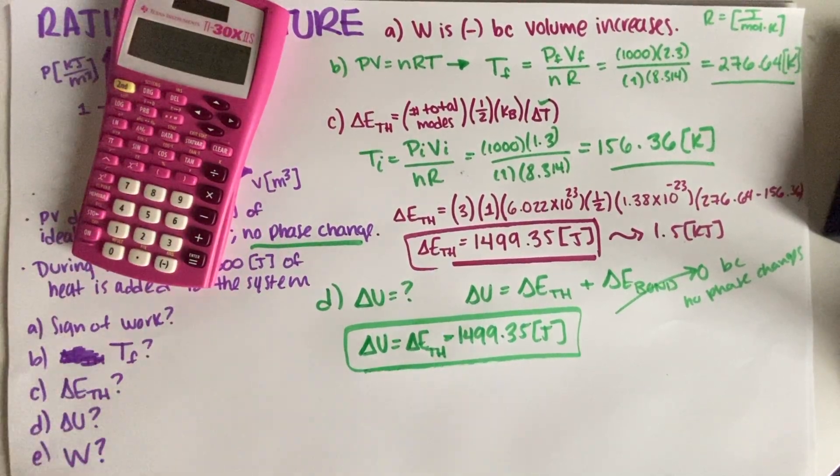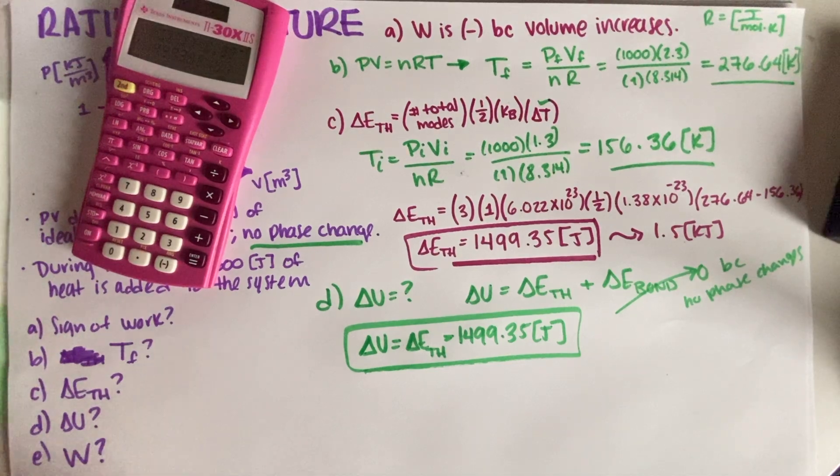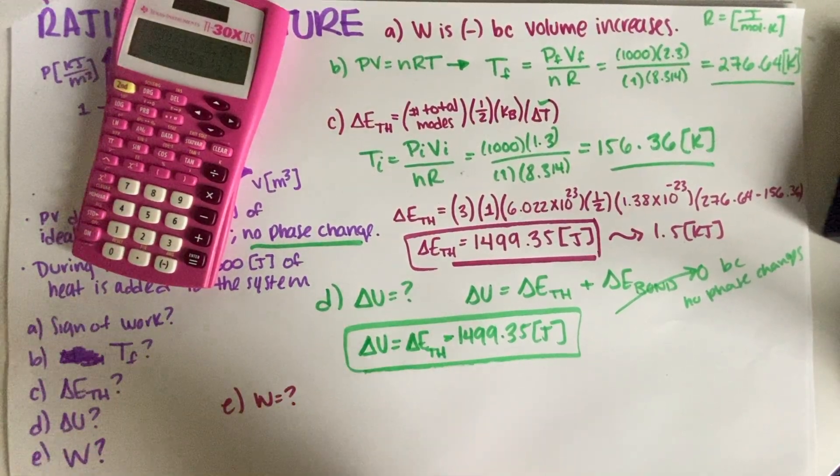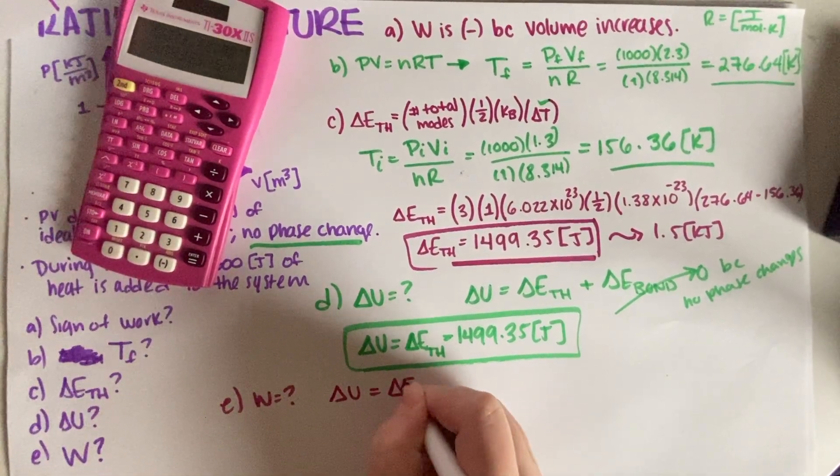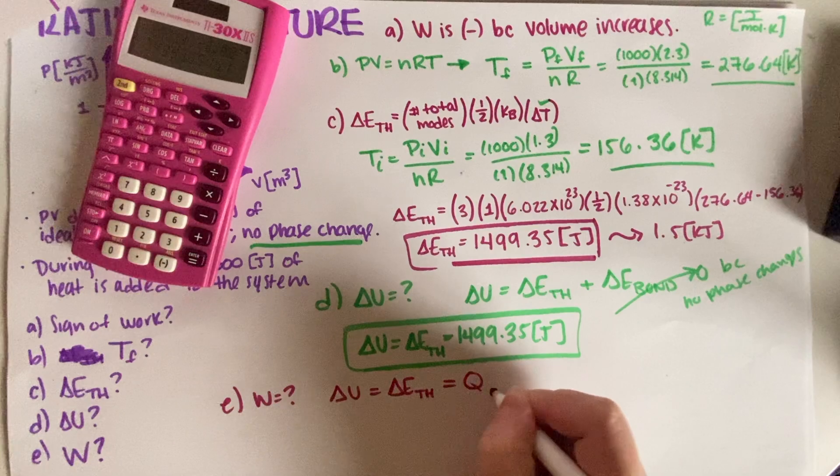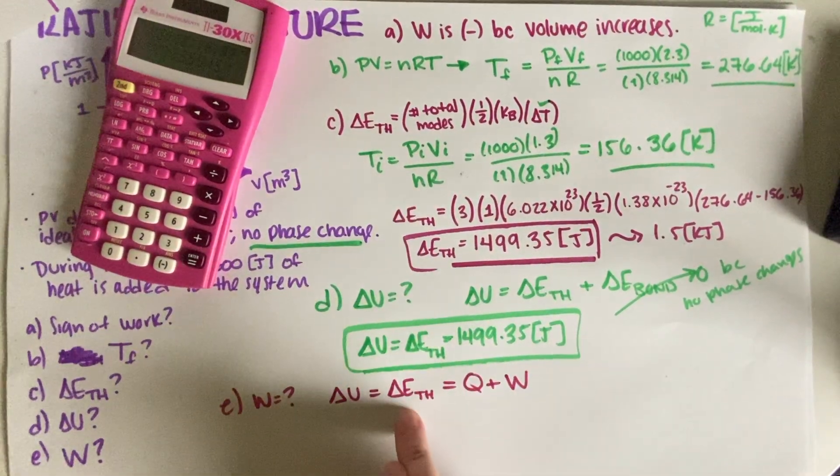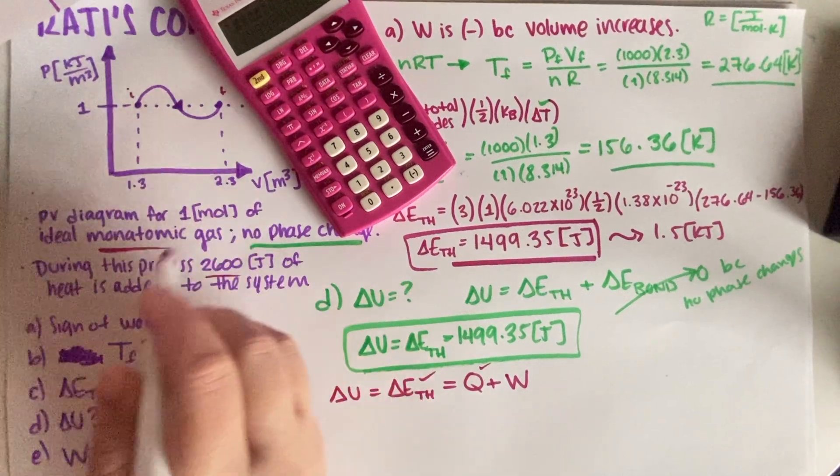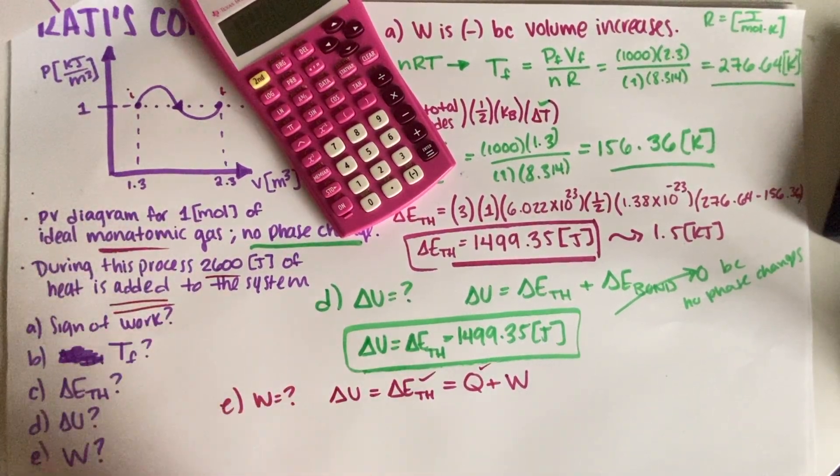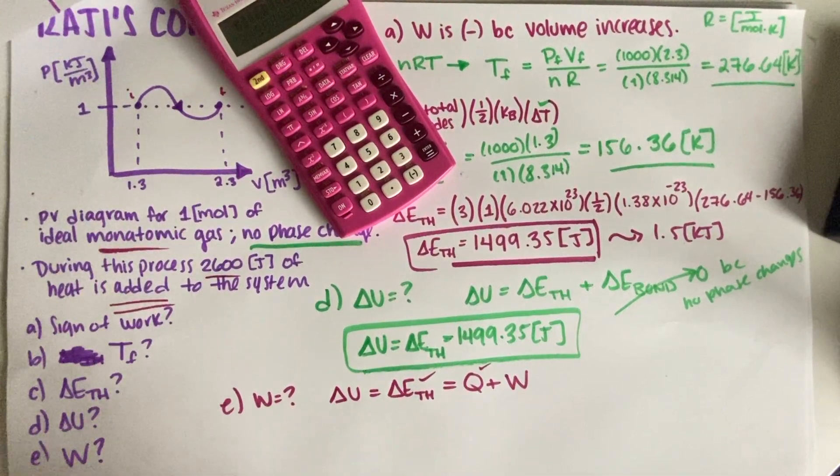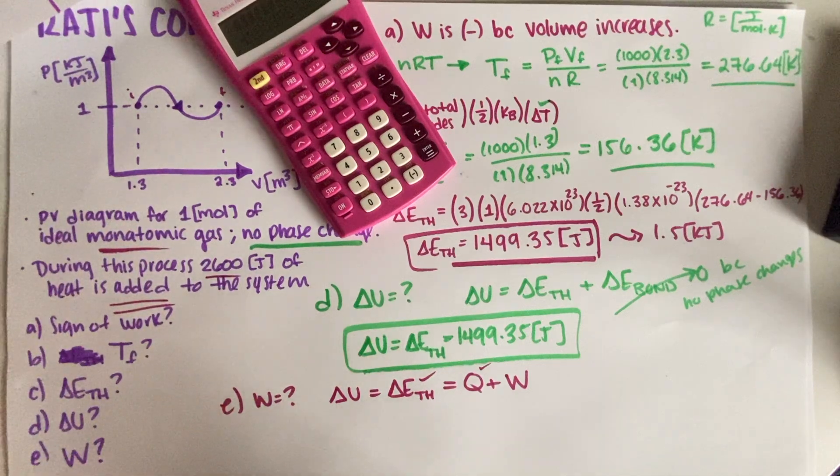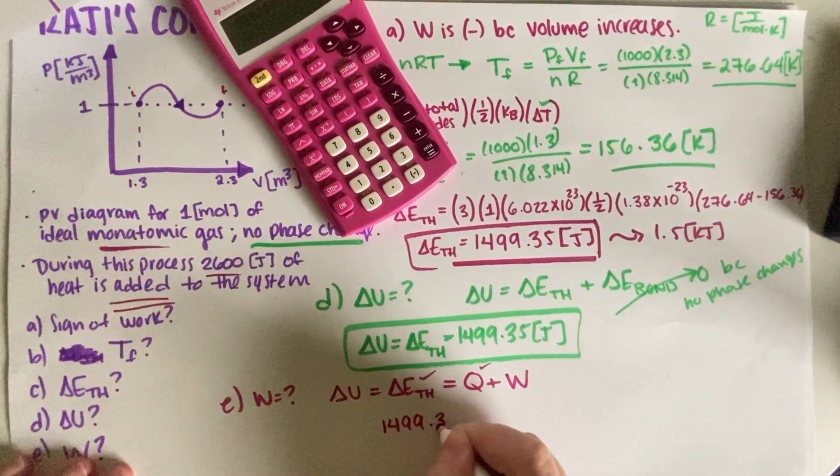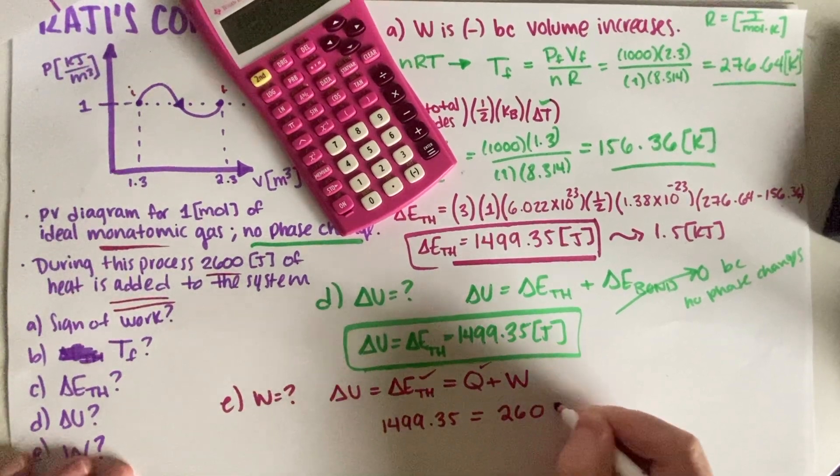All right. So now for part E, we have to figure out the actual magnitude for work. Okay. So part E, we have to figure out work. And we're going to use the other side of this equation, which is that delta U is equal to delta E_th, but it is also Q plus W. Now, this one we have, and this one we have, because the problem is saying 2,600 joules of heat is added to the system. That means positive, because the system is gaining energy. So if you add it to the system, the system has more heat.